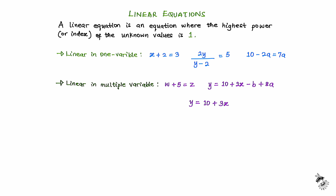Another example of linear in multiple variables: the unknowns are y, x, b, and a — all unknown variables in this example. The highest power of each individual unknown variable is 1: the power of y is 1, x is 1, b is 1, and a is 1. Hence, this equation is linear. But because we have more than one unknown variable, we say it is linear in multiple variables.